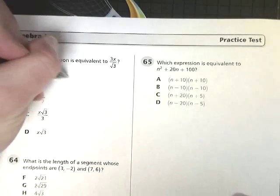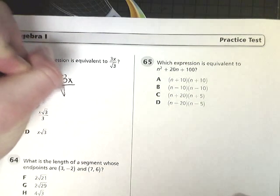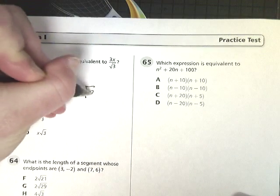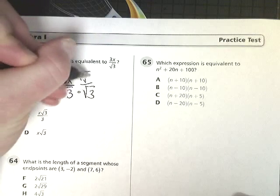So I'm going to rewrite this as 3x over the square root of 3. I need to multiply this times itself, so they both get multiplied by the square root of 3.